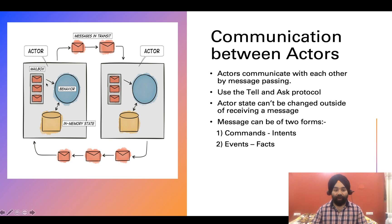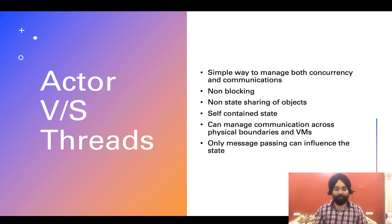As shown in this diagram, there are two actors, each having their own mailbox, behavior, and state, communicating with each other by passing messages. Messages are the only way these two actors can influence each other's state. Actors offer a simple way of managing both concurrency and communication. Since they rely on message passing, they are non-blocking in nature and there is no state sharing between actors as compared to threads. For actors deployed on different machines running on different VMs, they can simply modify each other's state by passing messages, greatly reducing the overhead of multiple threads waiting for a lock.